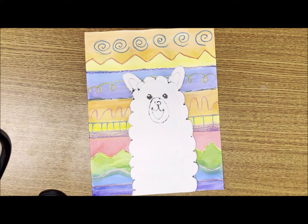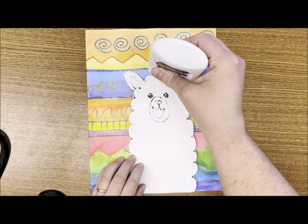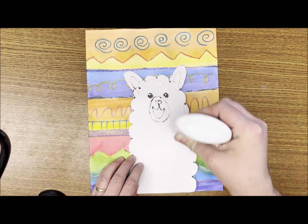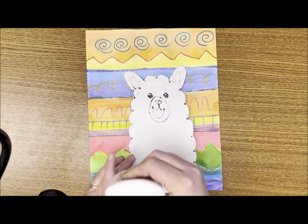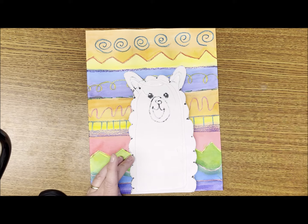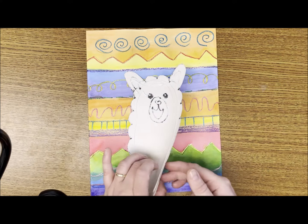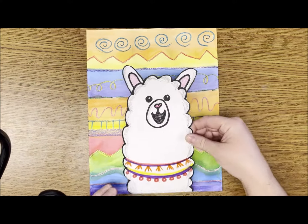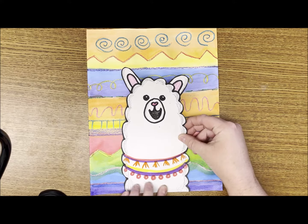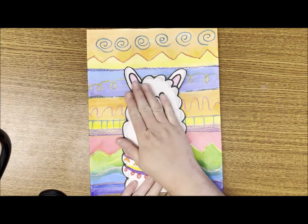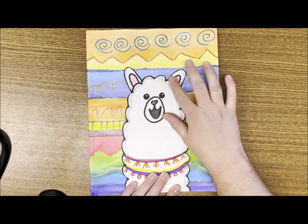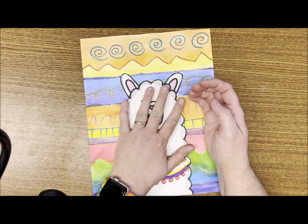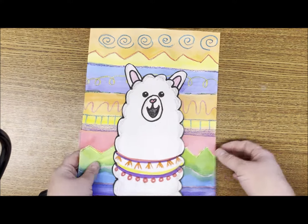Turn the image over to add a line of glue around the edge. I'm going to gently place it so that the bottom of the llama lines up with the bottom of my page, pressing down and making sure it's secure. I have created my Peruvian line textile llama design.